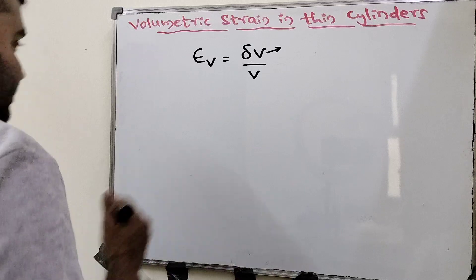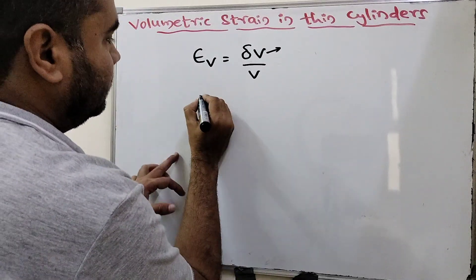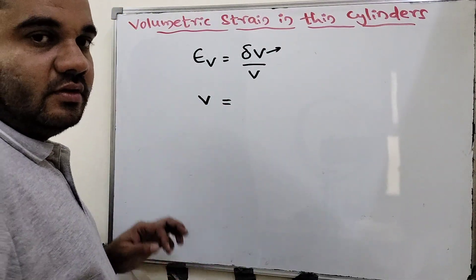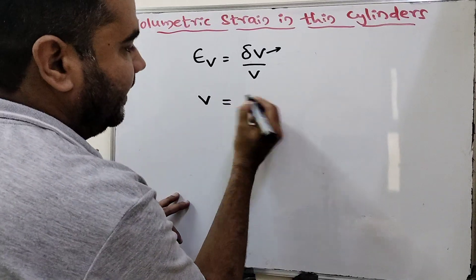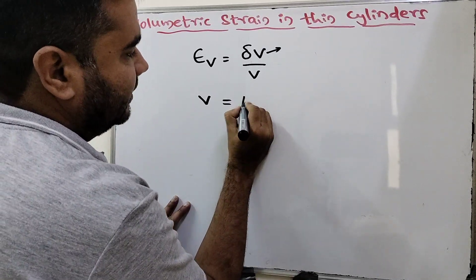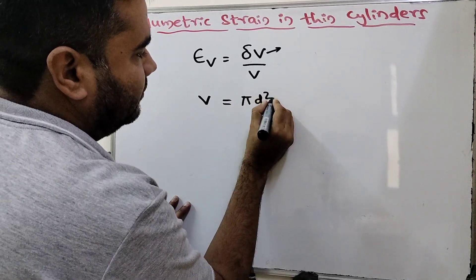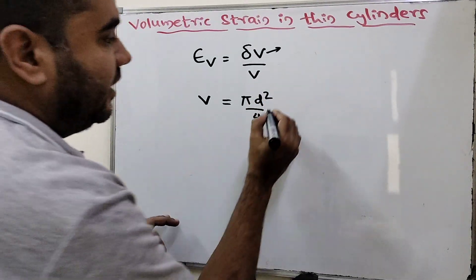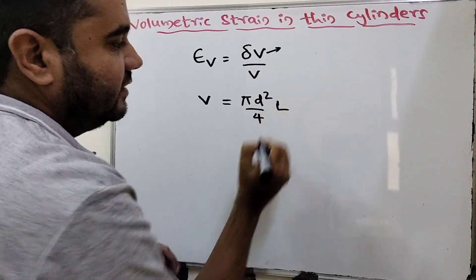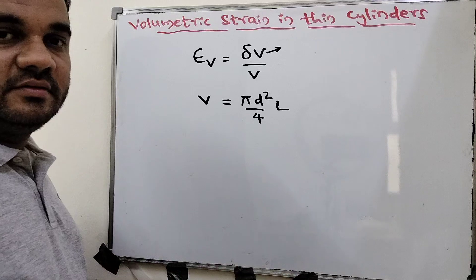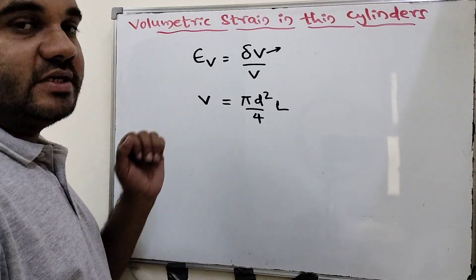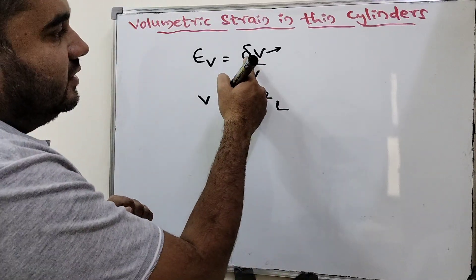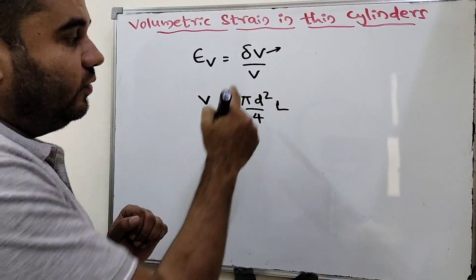The actual volume equation is V equal to area into length. The area of the cylinder is π d² / 4, so V = π d² / 4 × L. This is the original volume.